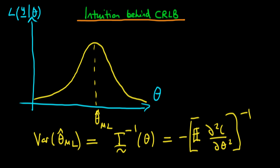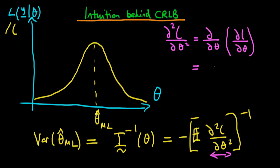I should add that even though I've graphed likelihood here, we can also think about the log likelihood as being represented by this y-axis. It doesn't really matter for our purposes, as we're just providing some intuition. Now, let's discuss what this term actually represents. We can rewrite d²l over dθ² as the derivative with respect to theta of the first order derivative dl over dθ. In this form, it becomes apparent that this is the derivative of the gradient with respect to the parameter theta.